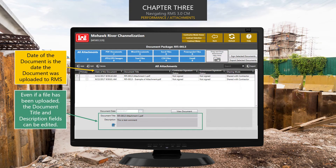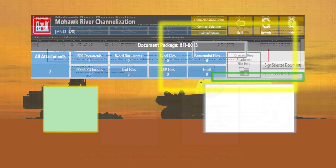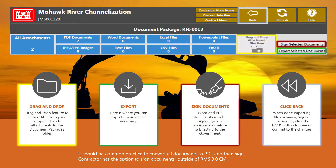This screen shows attachments within a document package. The contractor can edit both the document title and the description of the attachment even if the file has already been uploaded. You can also drag and drop attachments in the All Attachments screen. Once you are done adding attachments, click the Back button to save. Within the document package screen, you can drag and drop attachments, which will import files from your computer and add them to the document packages folder. You can export documents if necessary. When appropriate, you can sign Word and PDF documents prior to submitting to the government. Always click the Back button to commit the changes to RMS.